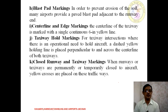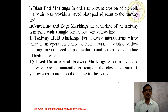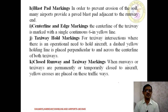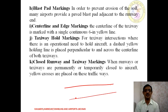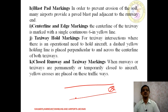Next is closed runway and taxiway marking. Whenever runways or taxiways are closed temporarily or permanently, they are marked with yellow crosses so that traffic does not use them. For example, on the edge of a runway or taxiway, a cross mark in yellow color is placed, called closed runway or taxiway marking.